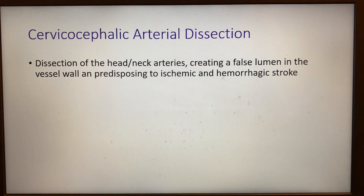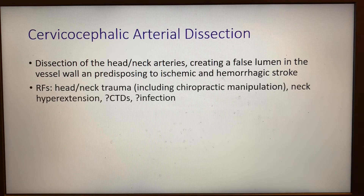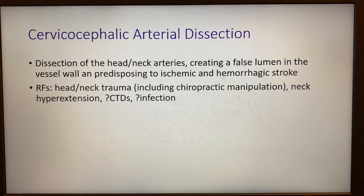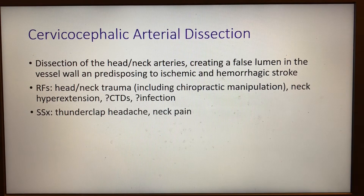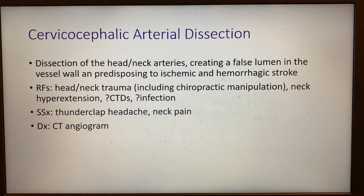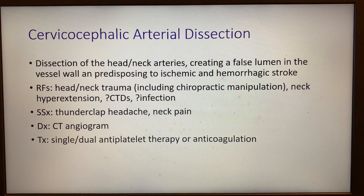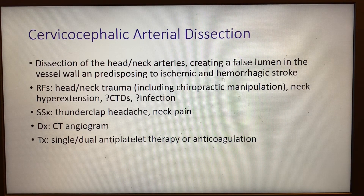A cervicocephalic arterial dissection is any false lumen created within the cervicocephalic arteries, which predisposes to both ischemic and hemorrhagic stroke. Risk factors include any head or neck trauma including chiropractic manipulation, neck hyperextension which can occur during motor vehicle accidents, and possibly connective tissue disorders and infection. Signs and symptoms include thunderclap headache and neck pain. This is diagnosed by CT angiogram and treated with either single or dual antiplatelet therapy or anticoagulation, though the evidence is still a little uncertain on which approach is superior.